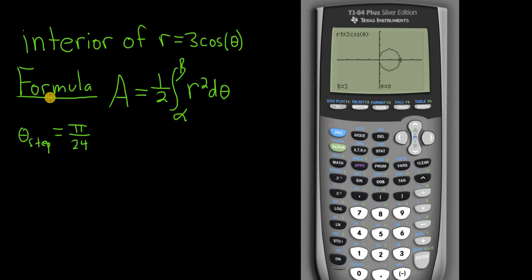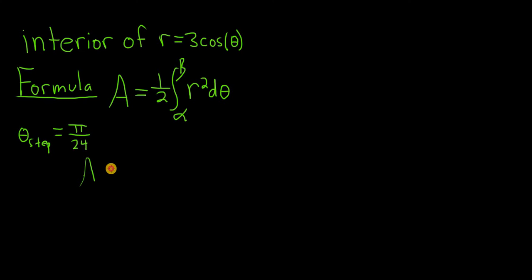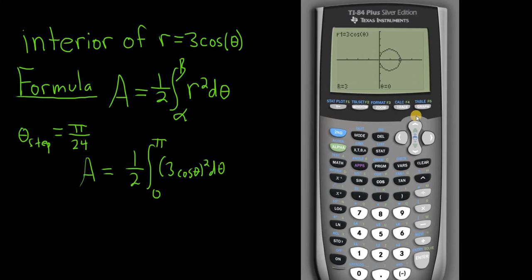So the answer is A equals 1 half definite integral from 0 to pi. And then you end up squaring this. So 3 cosine theta quantity squared. So I'm going to explain it again. And I'm going to show you another way, so no worries.